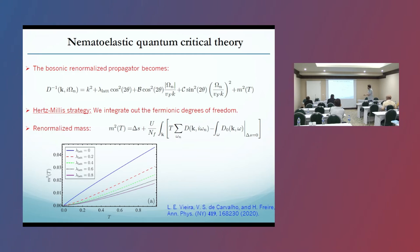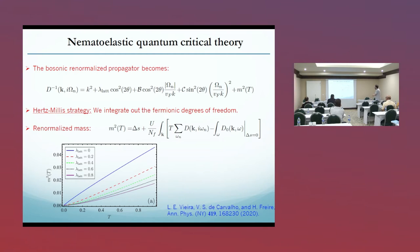We get this plot as a function of lambda lattice, varying it from 0 to 0.8. When lambda lattice equals zero, we reproduce the linear dependence of the bosonic mass as a function of T. But as we switch on the nematoelastic coupling, we get a T-squared dependence. So for very large temperatures we still get a T-linear dependence, but for smaller temperatures we get a T-squared dependence.